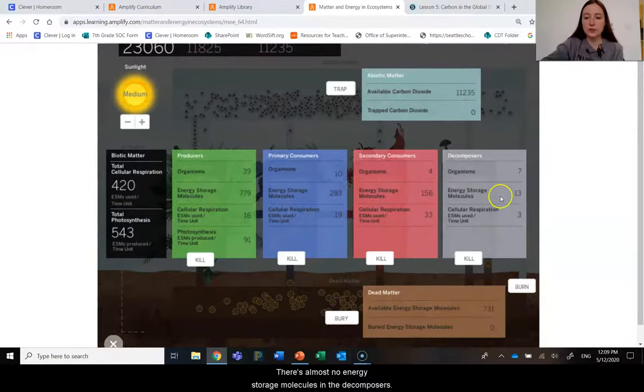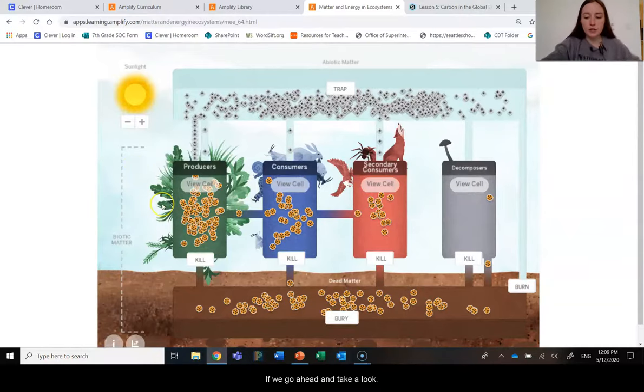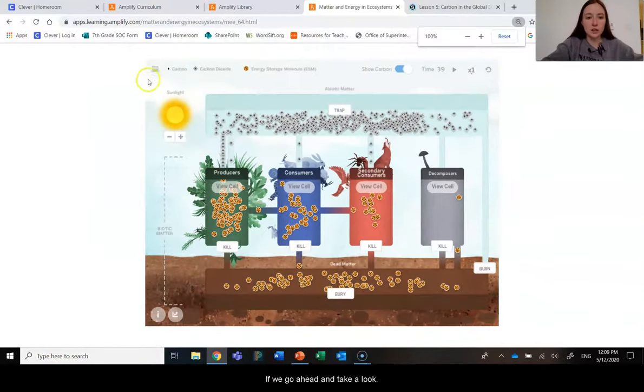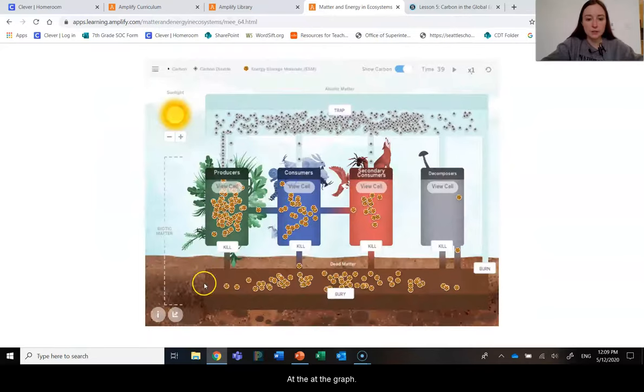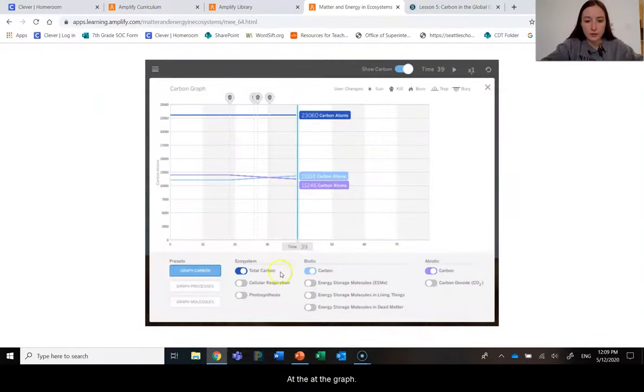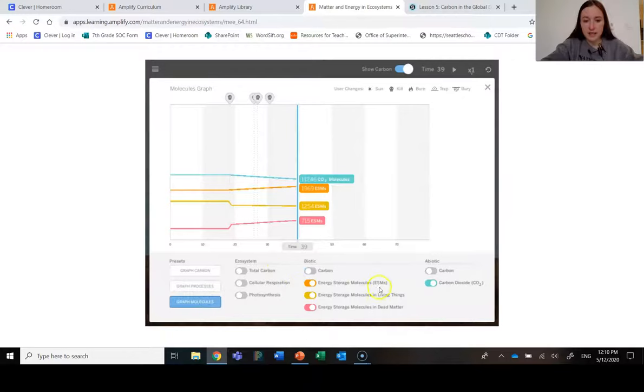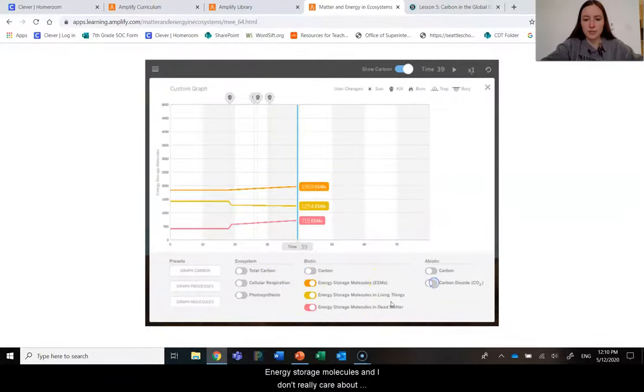Most of the energy storage molecules are actually here and in the producers, as we see. There's almost no energy storage molecules in the dead matter. If we go ahead and take a look at the graph, I just really want to see energy storage molecules. And I don't really care about the carbon dioxide at this time.